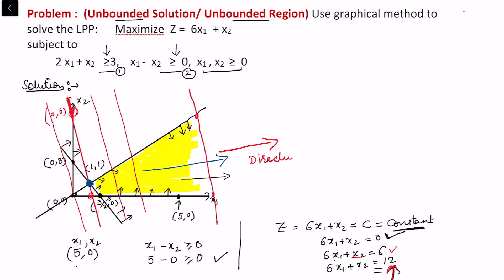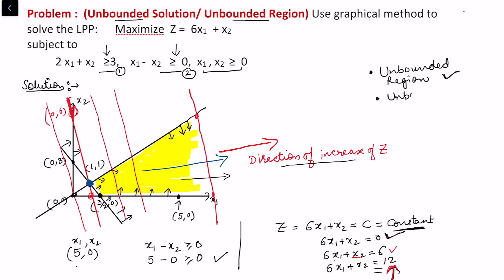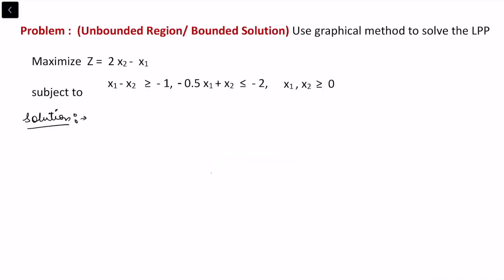Because the direction of increase of z is also not bounded, we conclude that it is an unbounded region and the LPP is also unbounded. Z takes values approaching infinity, and x1 and x2 also both approach infinity. This is the Case 3 conclusion: the region is not bounded and z is also unbounded.